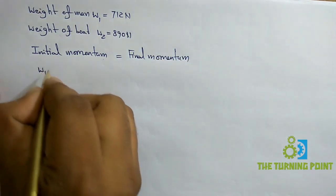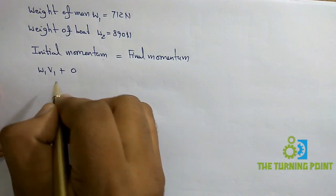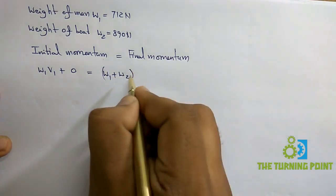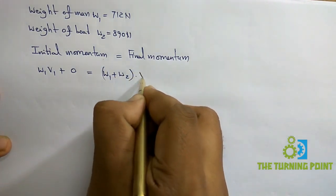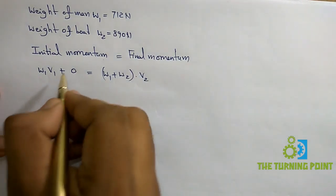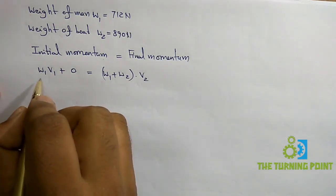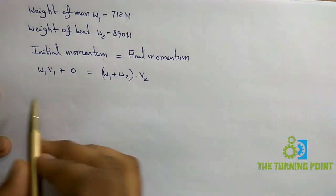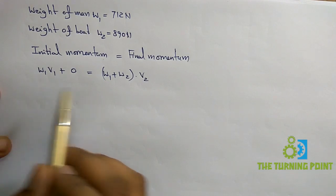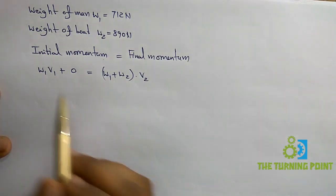So: w1·v1 plus initial momentum of boat (which is zero) equals final momentum of (w1 + w2) into velocity of boat, considered as v2. The initial momentum of the boat is taken as zero because there is no initial momentum. Since w = mg, the g cancels on both sides, so we write directly in terms of weights w1 and (w1 + w2).